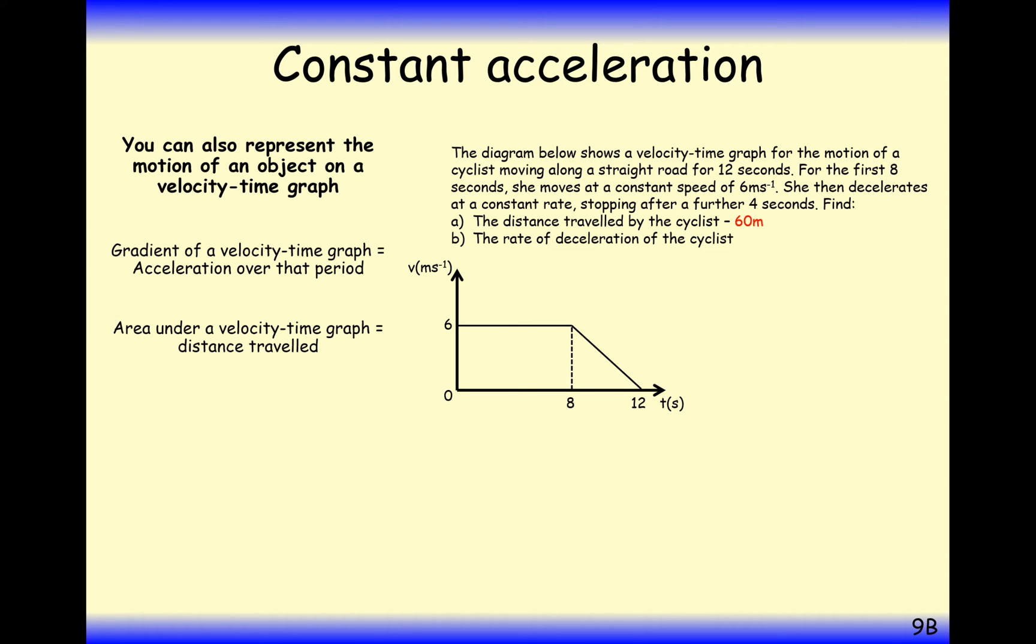Find the rate of deceleration of the cyclist. To work out the gradient here, we do difference in y or difference in v divided by difference in x, which is time. So it's change in v divided by change in time.